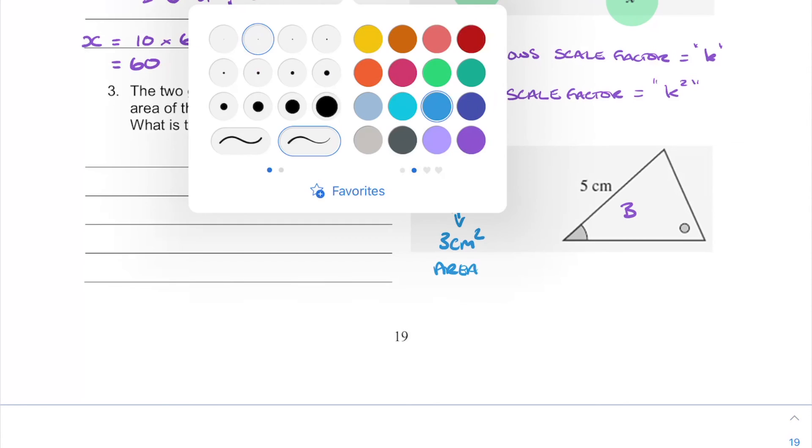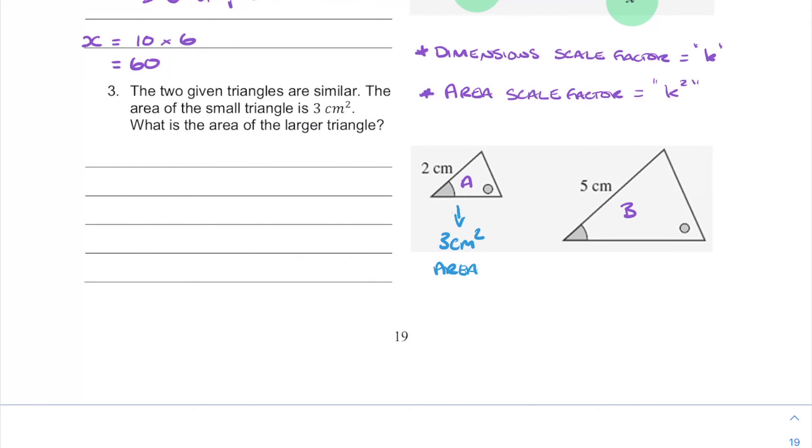So we just do the same process as before. We just want to find k first, and then we can do the rest. So k, we have our corresponding sides of 5 centimeters and 2 centimeters. Shape b over shape a gets us 5 over 2. So 5 over 2 is our scale factor of k. But we want k squared.